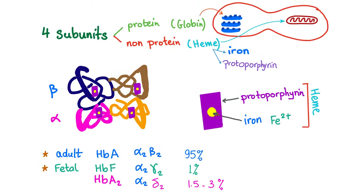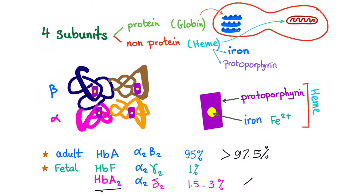Globin means protein. As discussed in the previous video, hemoglobin has four subunits — 2 alpha and 2 beta protein chains — plus a heme component consisting of protoporphyrin and iron. So hemoglobin has four globin subunits and four heme groups. In adults, hemoglobin A should be at least 95%, usually more than 97.5%. Hemoglobin A2 should be less than 2.5%, and hemoglobin F, the fetal form, should be very minimal.